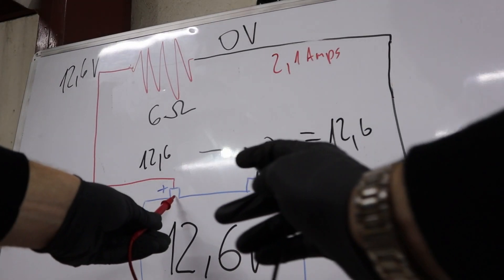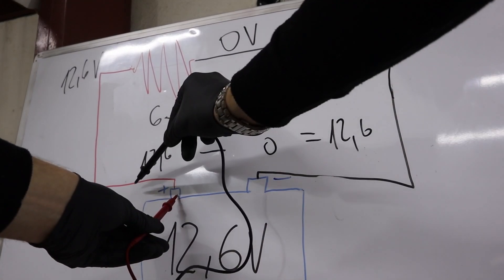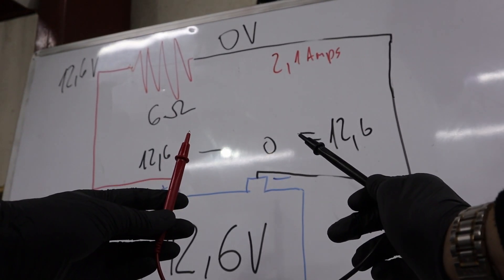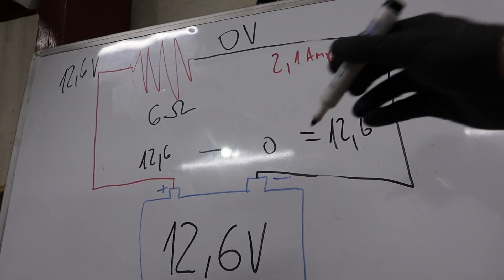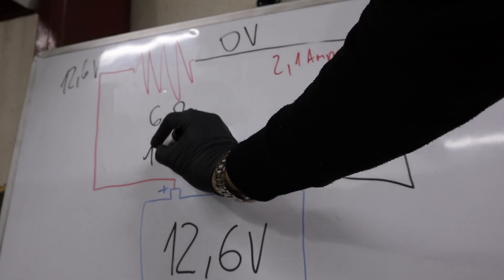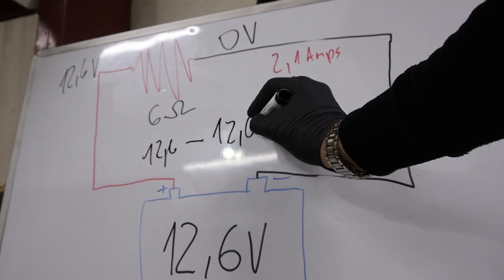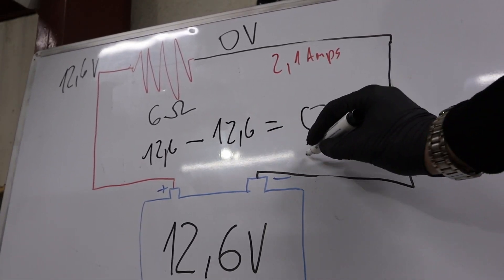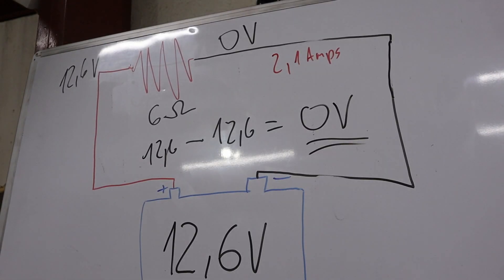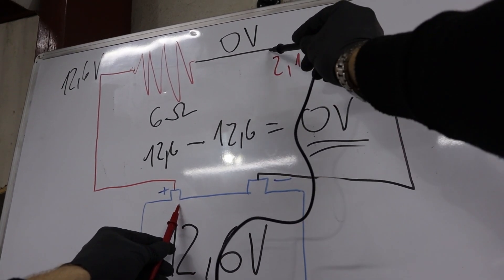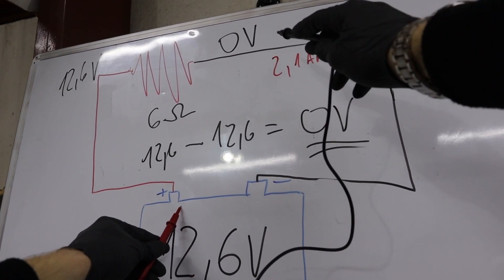If I put one lead on the positive side and the second lead also on the positive side, both leads will read 12.6V. What you'll see on screen is one lead reading 12.6 minus the second lead reading 12.6, so you get 0 volts. If you want to measure voltage, you need to put one lead before the resistor and the second after the resistor. Then you get an accurate voltage reading.